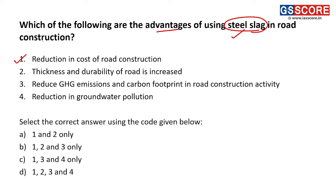Second statement: thickness and durability of road is increased. This is an incorrect statement. Though durability of roads does increase, the thickness of steel slag-based roads is not more — it is 30 percent lesser than usual roads. Third statement: reduced GHG emissions and carbon footprint in road construction. This is correct, because using steel slag reduces our dependency on tar, leading to reduction in greenhouse gas emissions and carbon footprint.